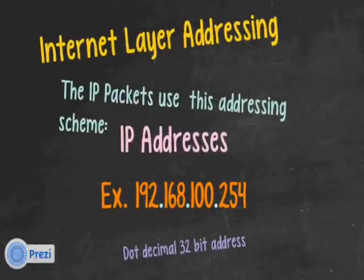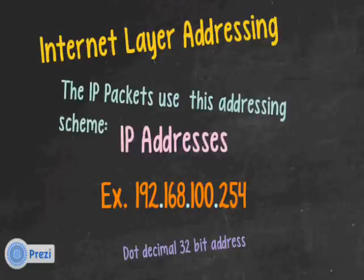Internet layer addressing — IP packets use IP addresses. An example IP address is 192.168.100.254. You've probably seen IP addresses before; we call it dotted decimal, a 32-bit address. Each one of these numbers, like 192, represents 8 bits. We've got four numbers, so 4 times 8 gives us our 32-bit address.